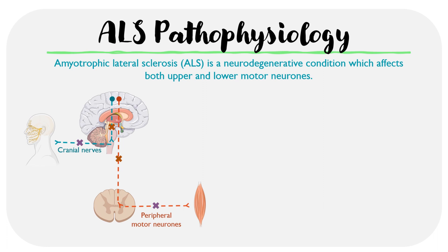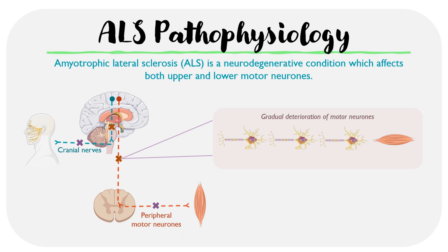At a more cellular level, there's a gradual deterioration of the motor neurons due to an unknown source, which basically leads to damage of motor neurons over time. If some motor neurons are particularly affected more than others, this can result in the destruction of the entire neuron, which leads to poor nerve signaling and therefore muscle dysfunction.